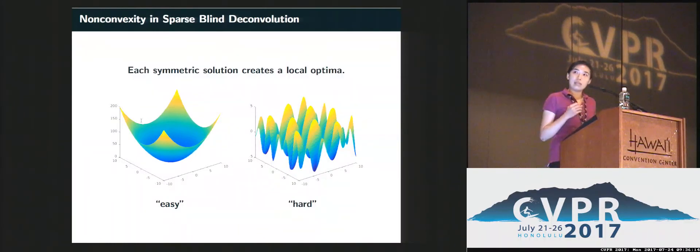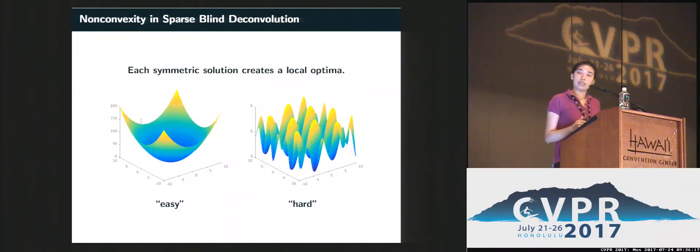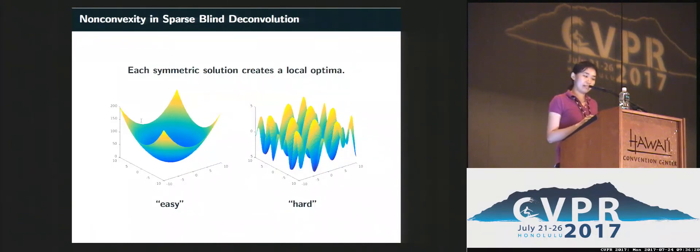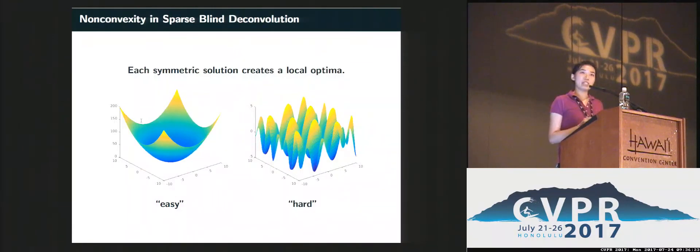In this talk, I will show that if we formulate the problem in the right way, then the local minima we find in this function are actually good, and we can use the information in each local minimum to find the ground truth.